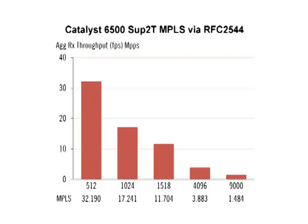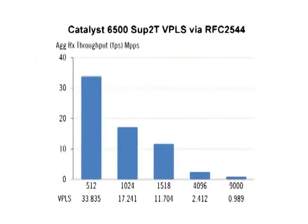For IPv4 traffic over MPLS, we measured throughput via RFC 2544 and the Catalyst 6500 achieved the performance we expected and is thus verified. For IPv6 over MPLS, we similarly measured throughput via RFC 2544 and the Catalyst 6500 achieved the expected performance. We compare IPv4 to IPv6 over MPLS and verify that the Catalyst 6500 delivers IPv6 performance on par with IPv4, noting that IPv6 headers are nearly four times larger than IPv4. For IPv6 over VPLS traffic, we also measured throughput via RFC 2544 and confirmed that the Catalyst 6500 delivers IPv6 performance on par with IPv4.